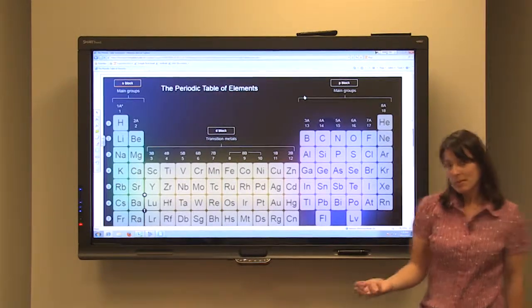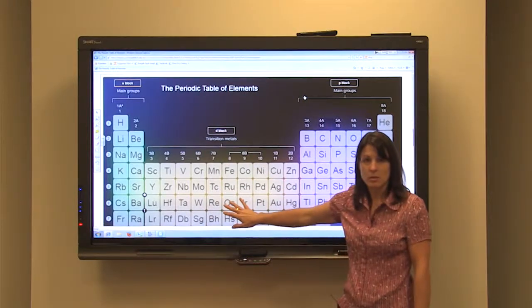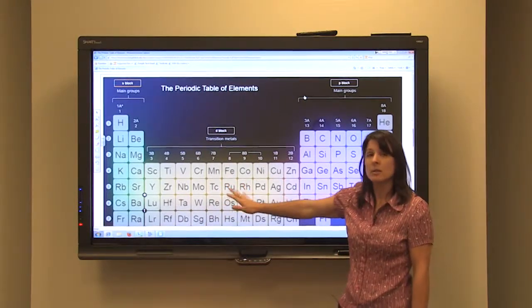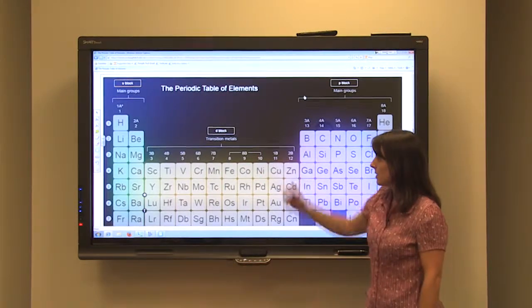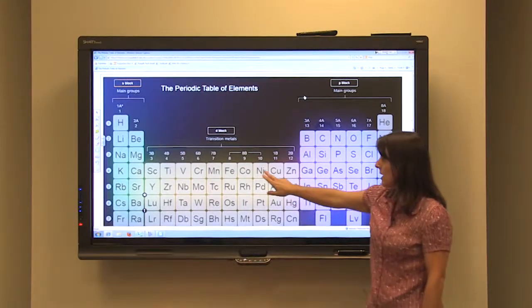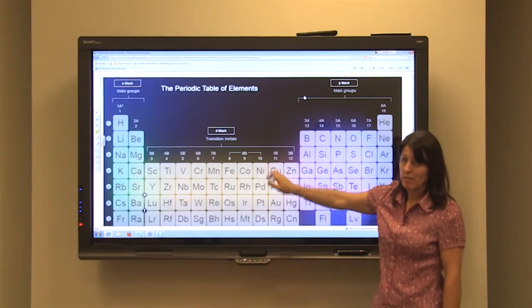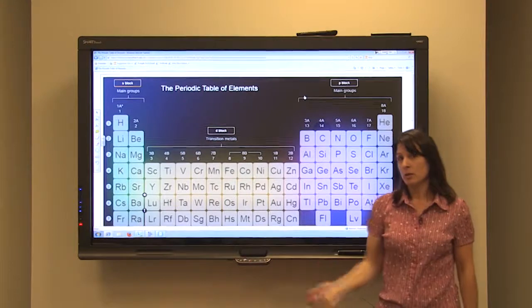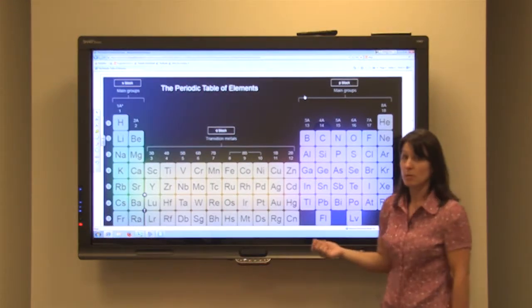Now, that does not work for the B elements. You can't tell how many valence electrons a group B element has just by its group number. So if we look at nickel, for example, its group number is 8B. It does not have 8 valence electrons, but I'm going to show you how you can use electron configurations to determine the number of valence electrons.